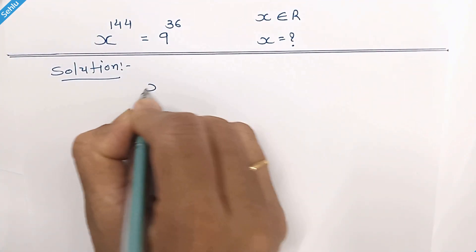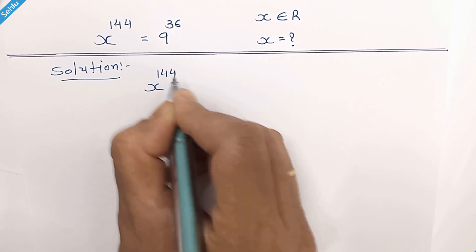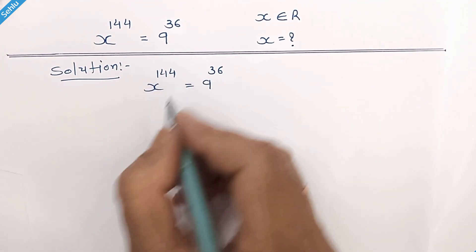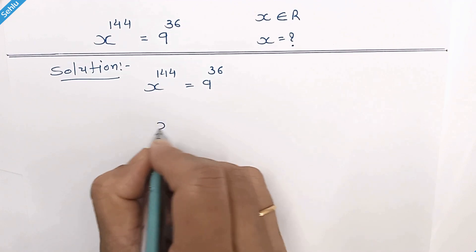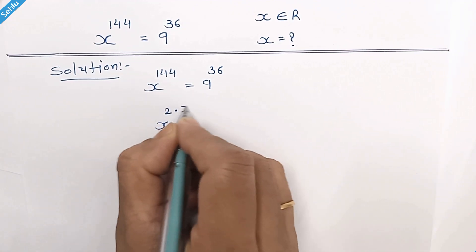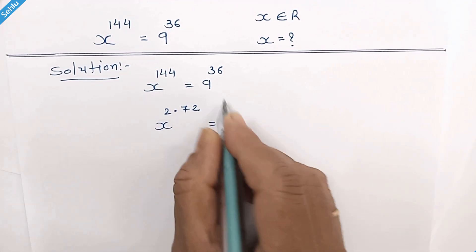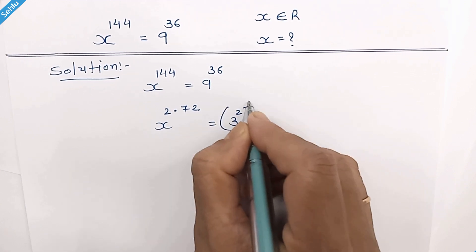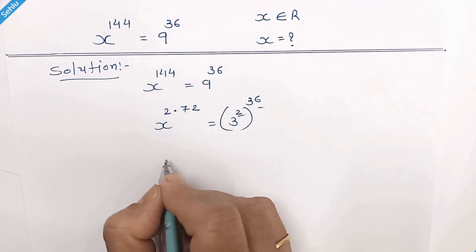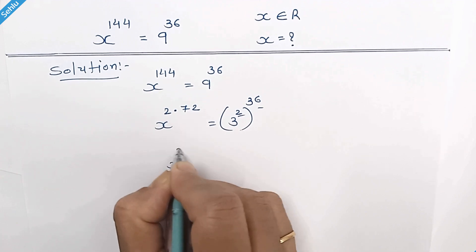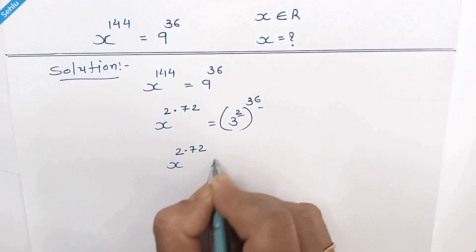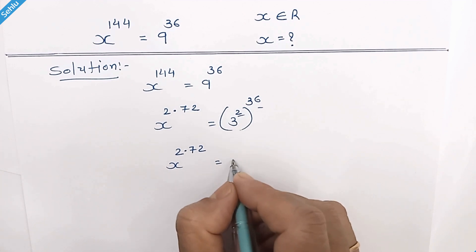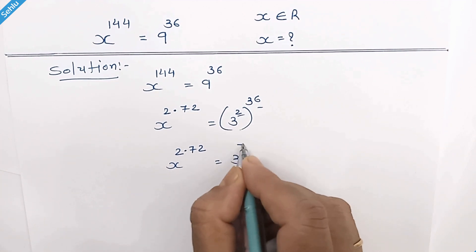The question is x to the power 144 is equal to 9 to the power 36. 144 can be written as 2 times 72, and 9 is 3 squared. We can multiply this 2, so 36 times 2 is 72.